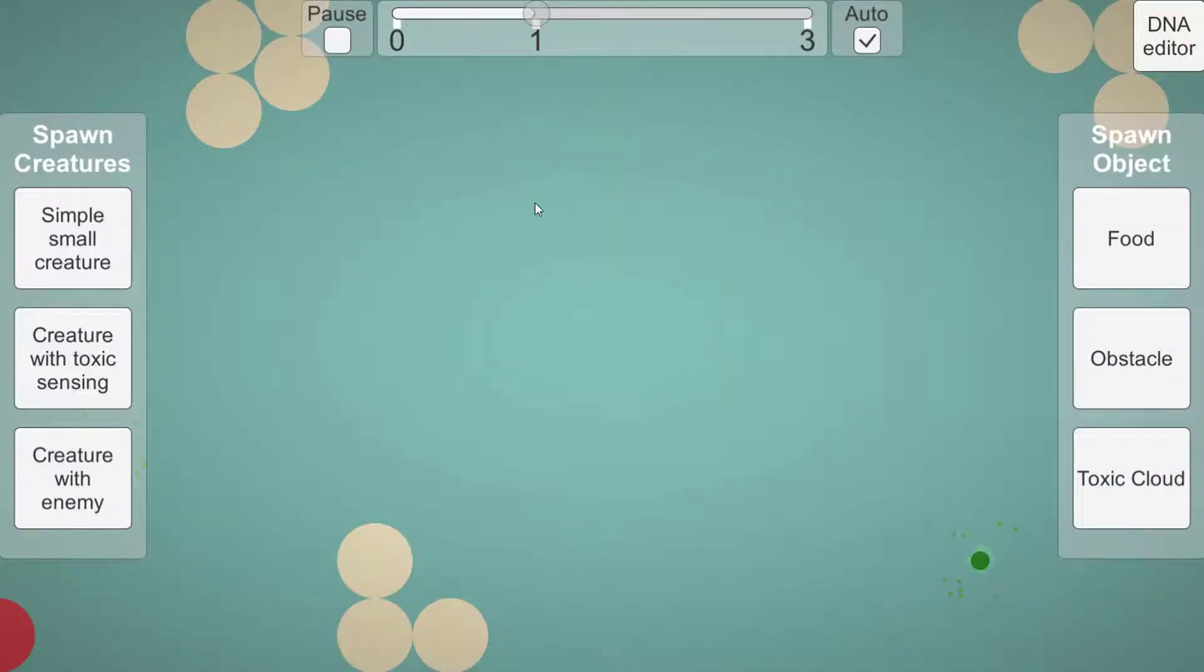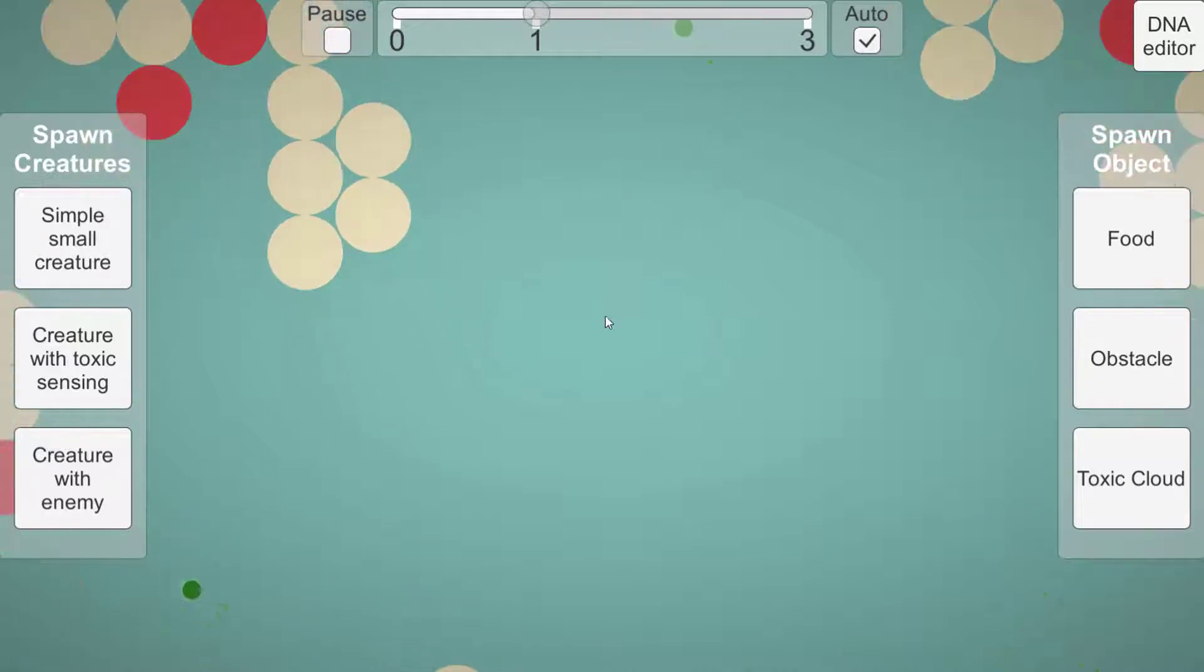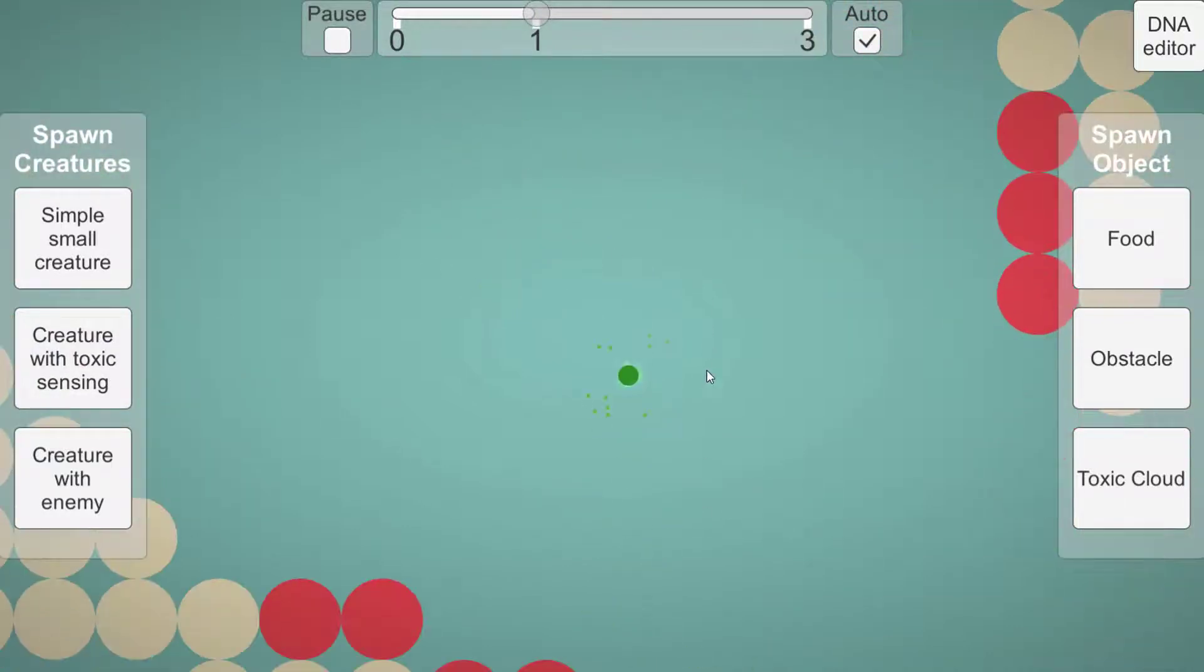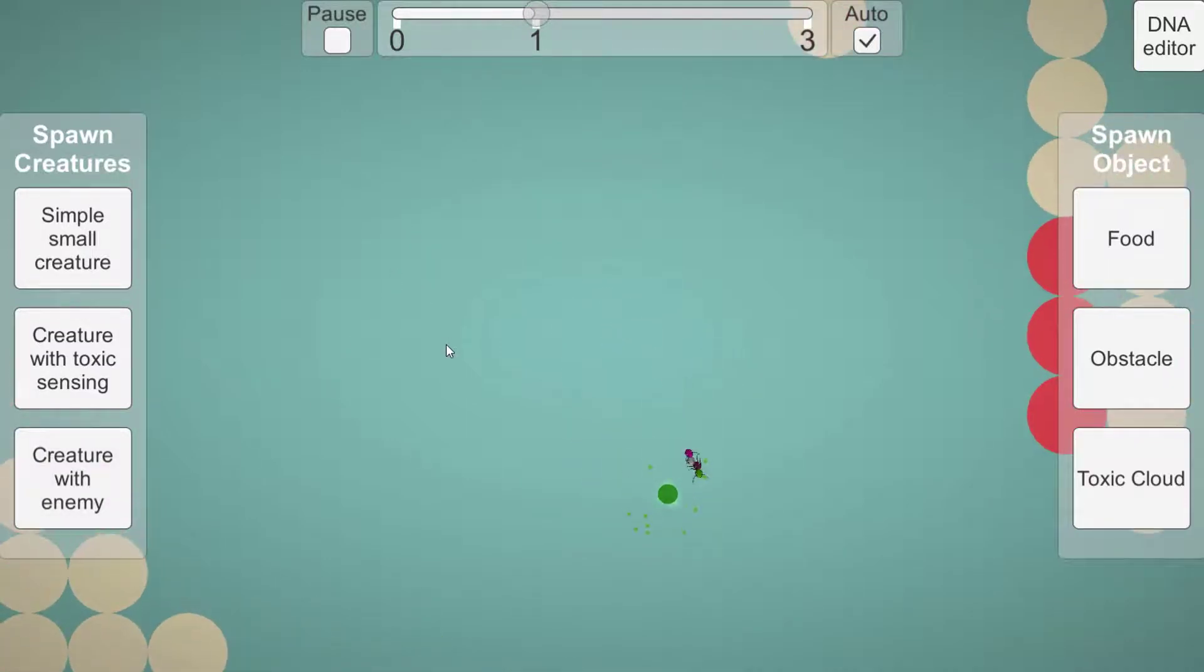The player can move the camera, zoom, select creatures and move creatures. The left panel is used to spawn new creatures from three templates: a two module very simple creature, a four module creature with a toxic sensing module and legs that are connected to this toxic sensing module, and a four module creature with a creature sensing module and spikes that are connected to this creature sensing module.